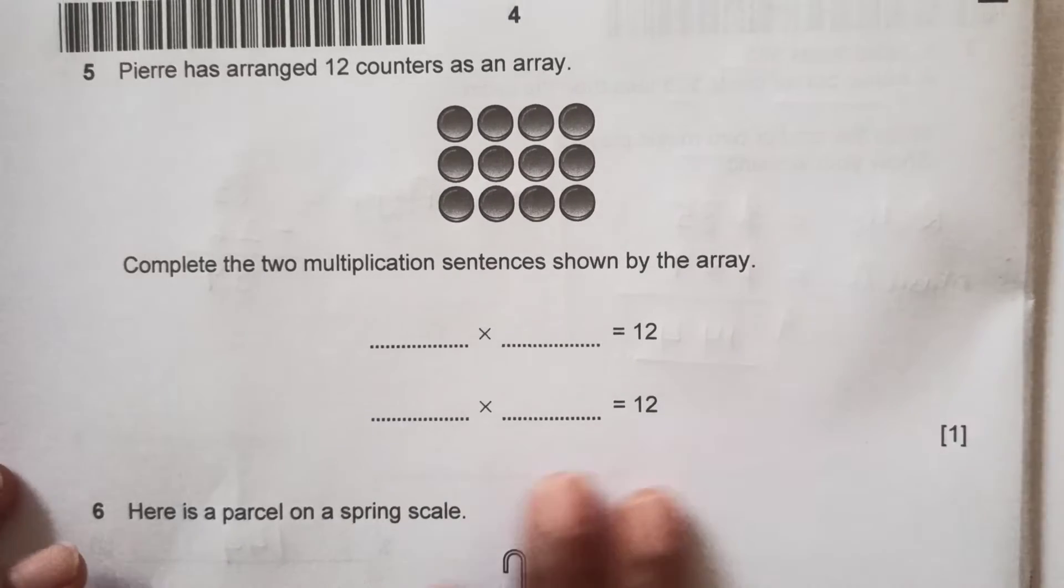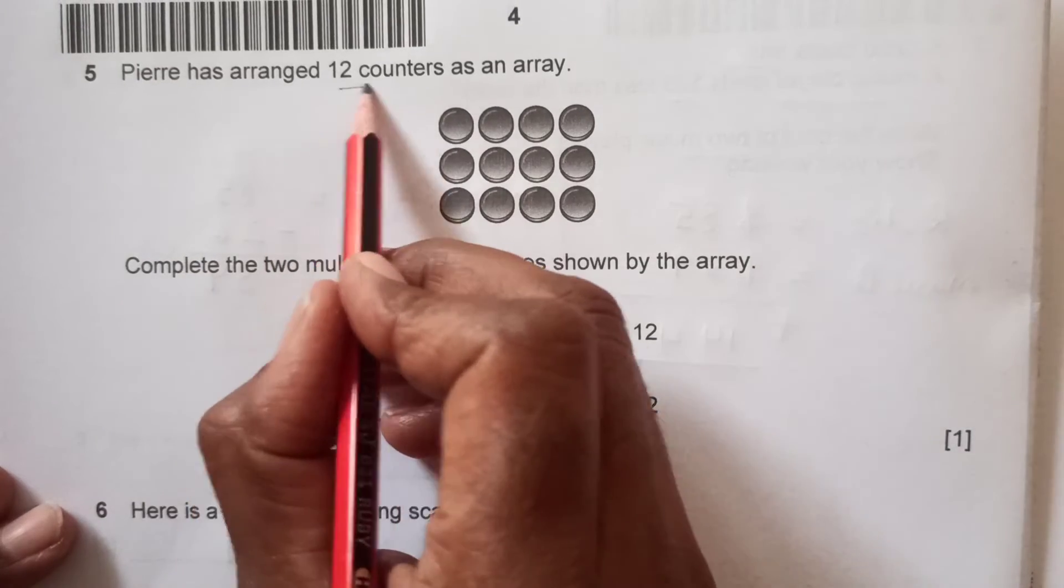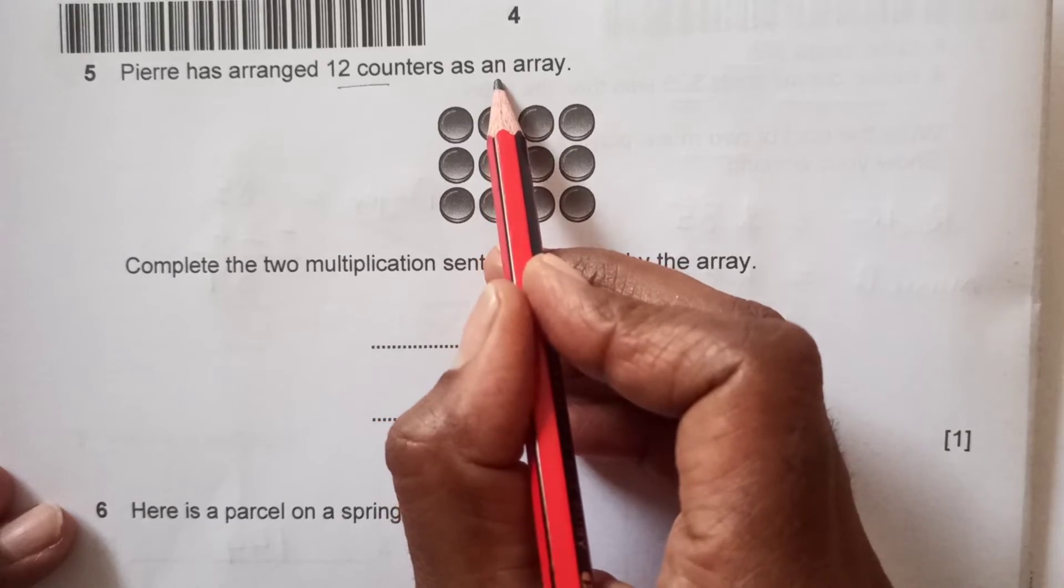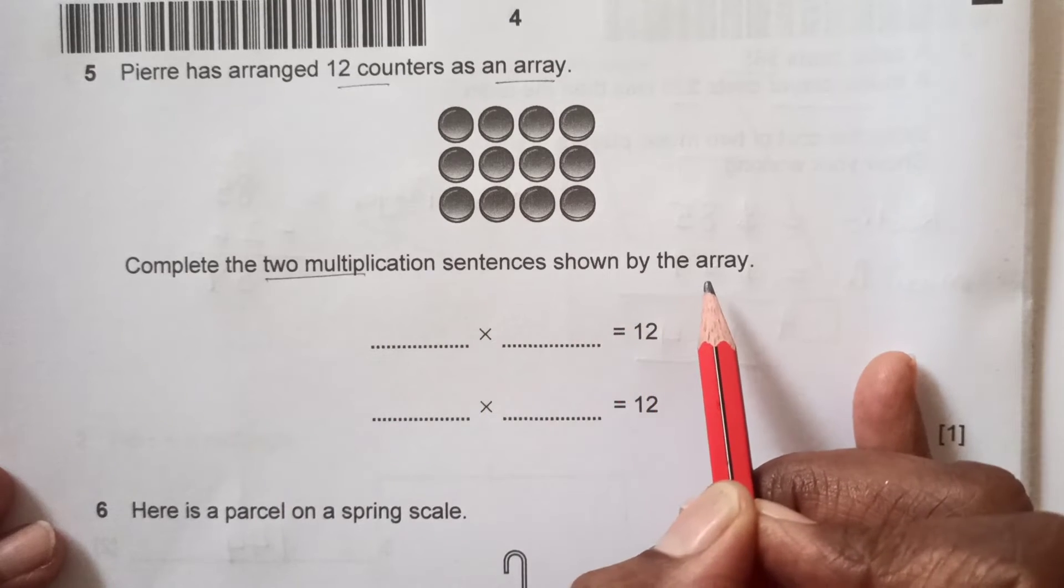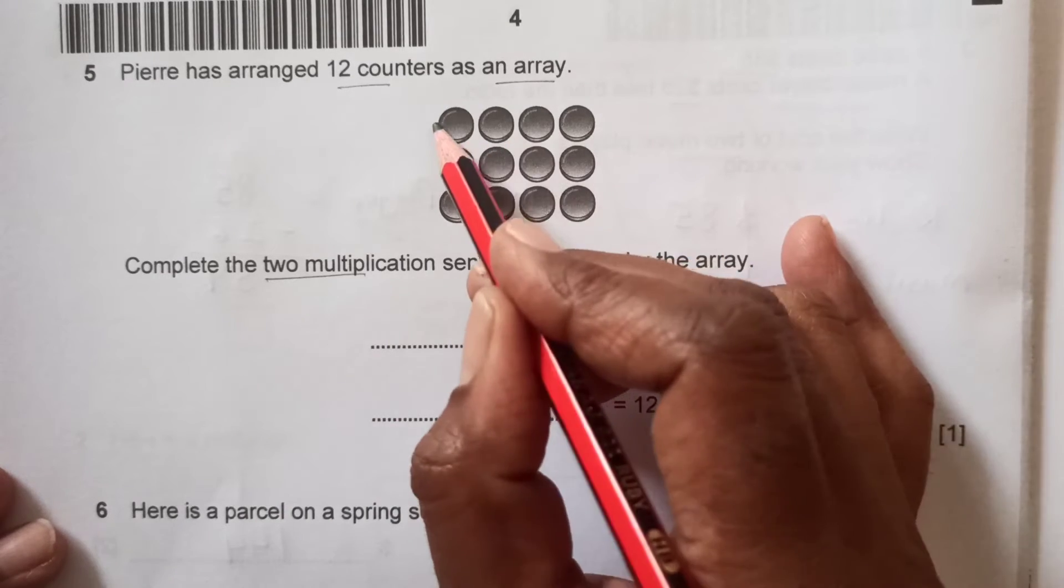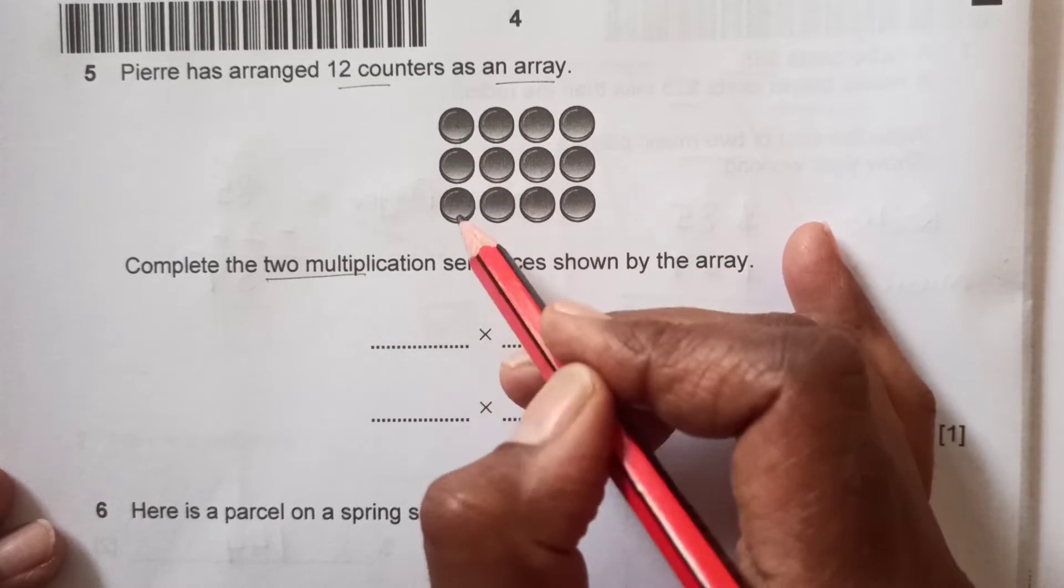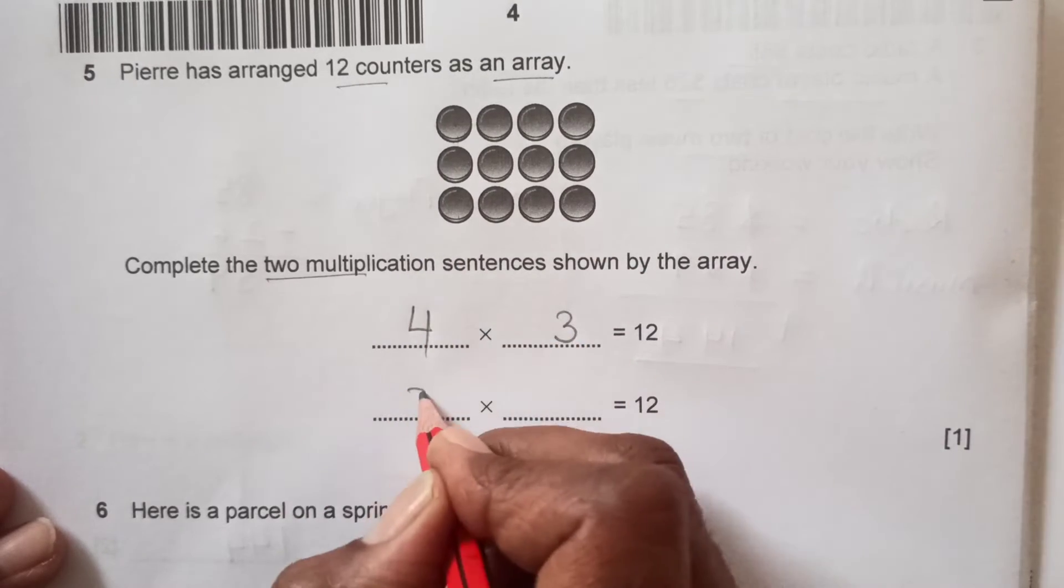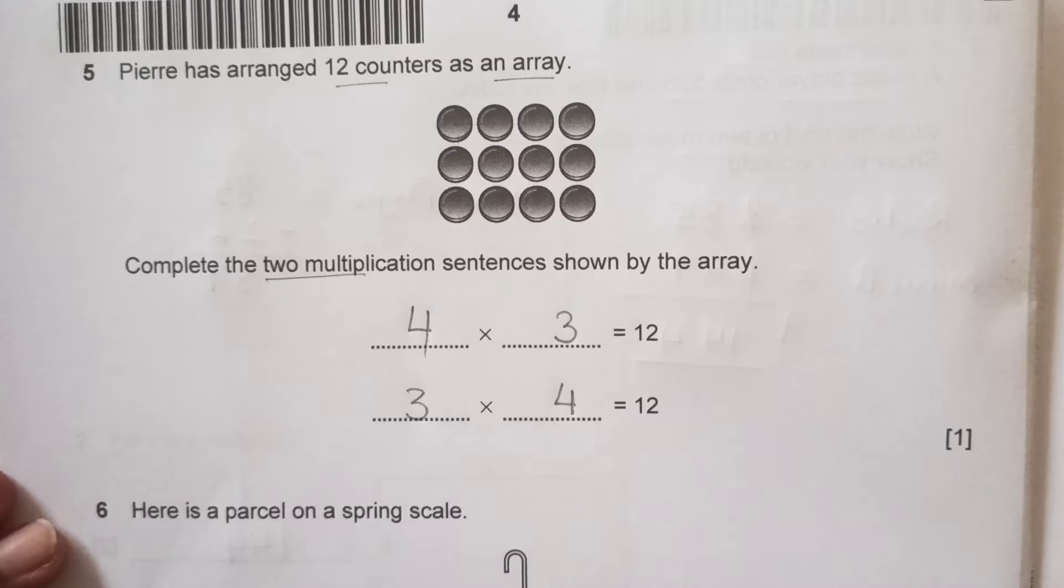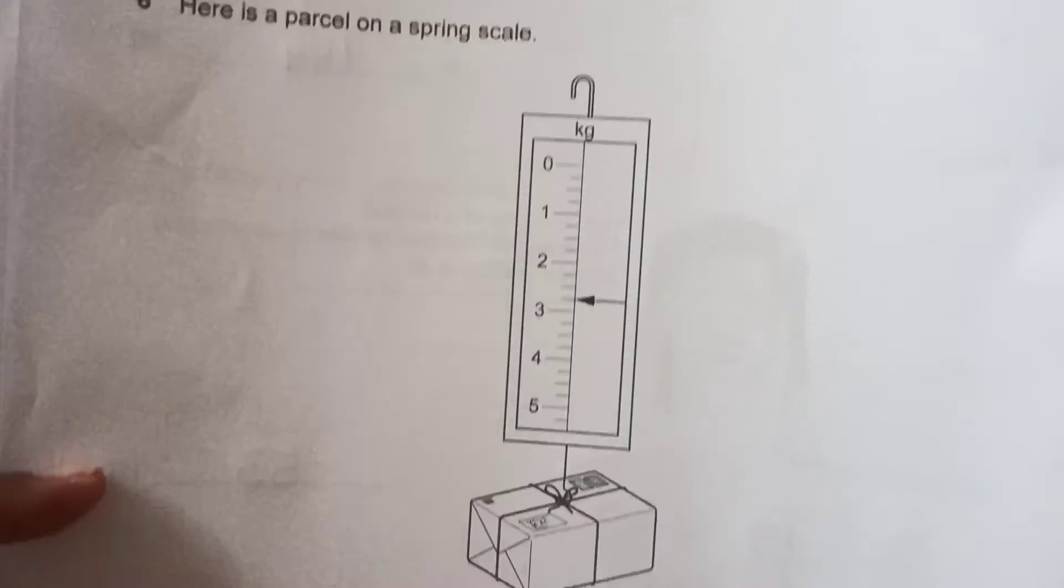Number 5: Pair has arranged 12 counters as an array. Complete the two multiplication sentences shown by the array. So you see we have 4 and this side we have 3, so it is 4 times 3, or maybe 3 times 4. You can write it in any of the two ways.